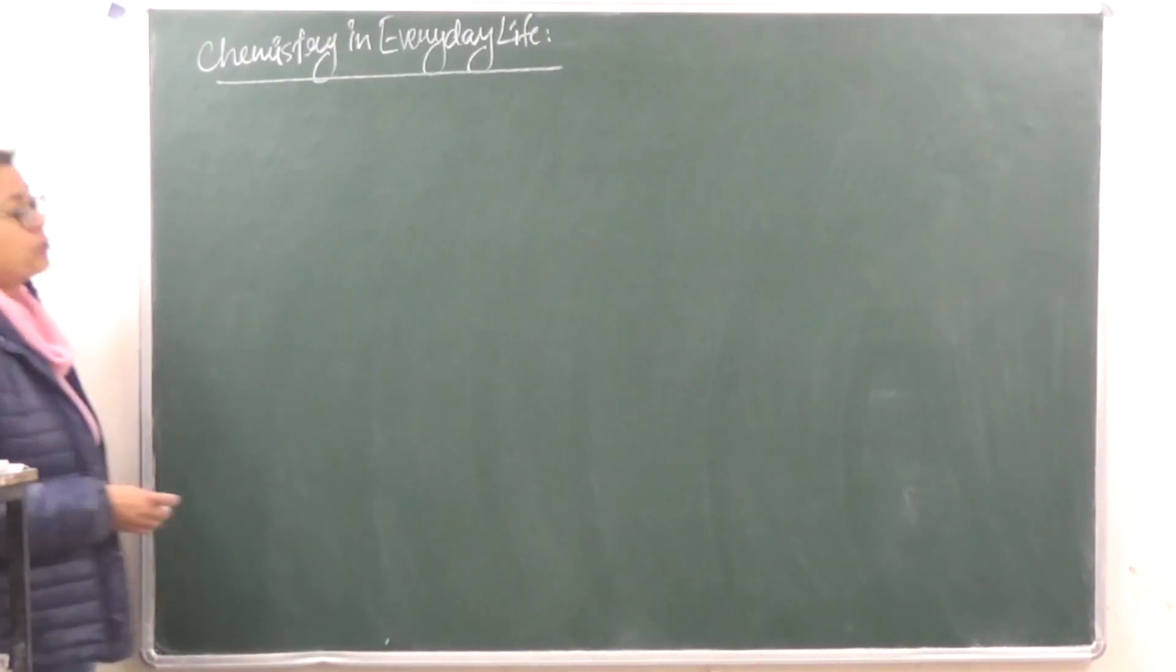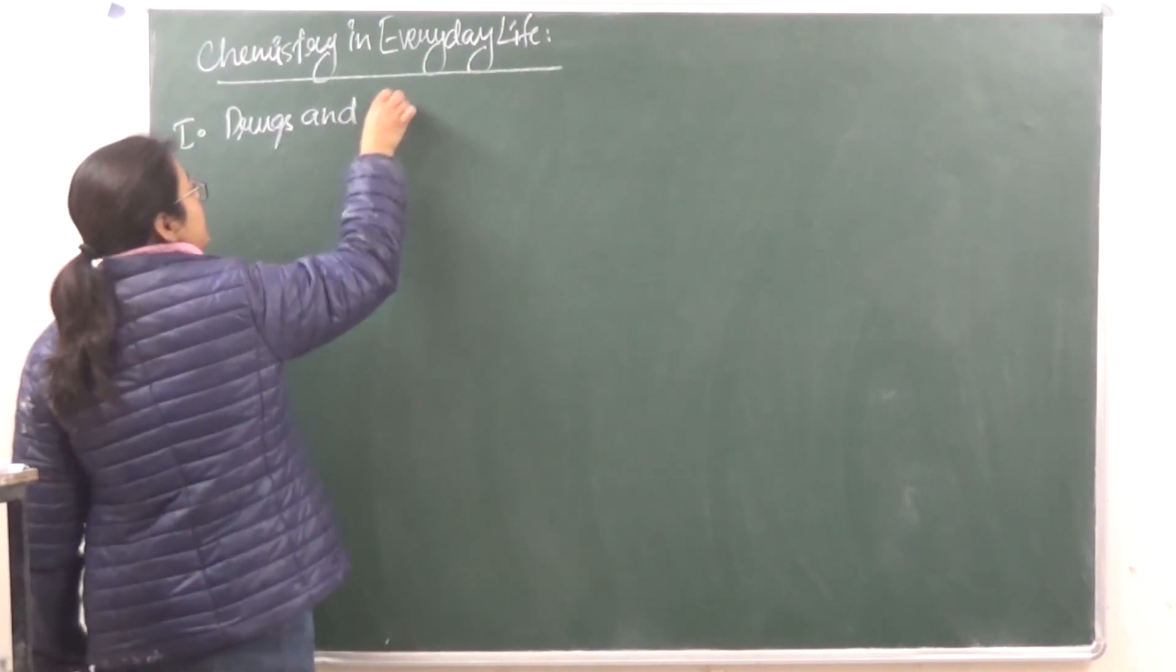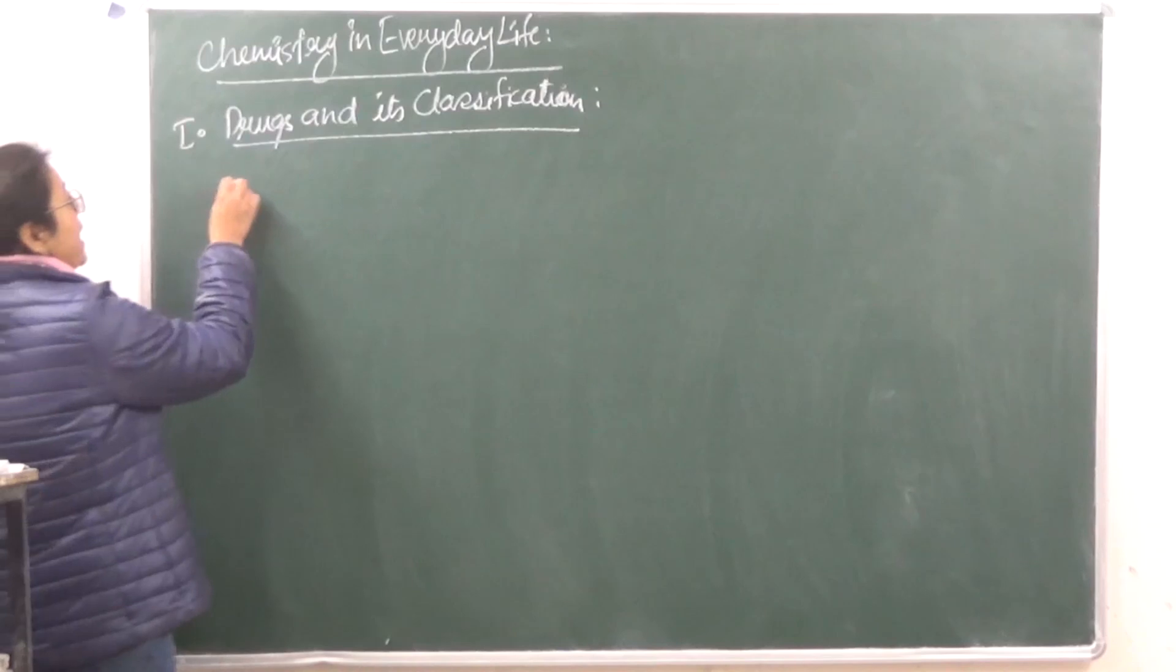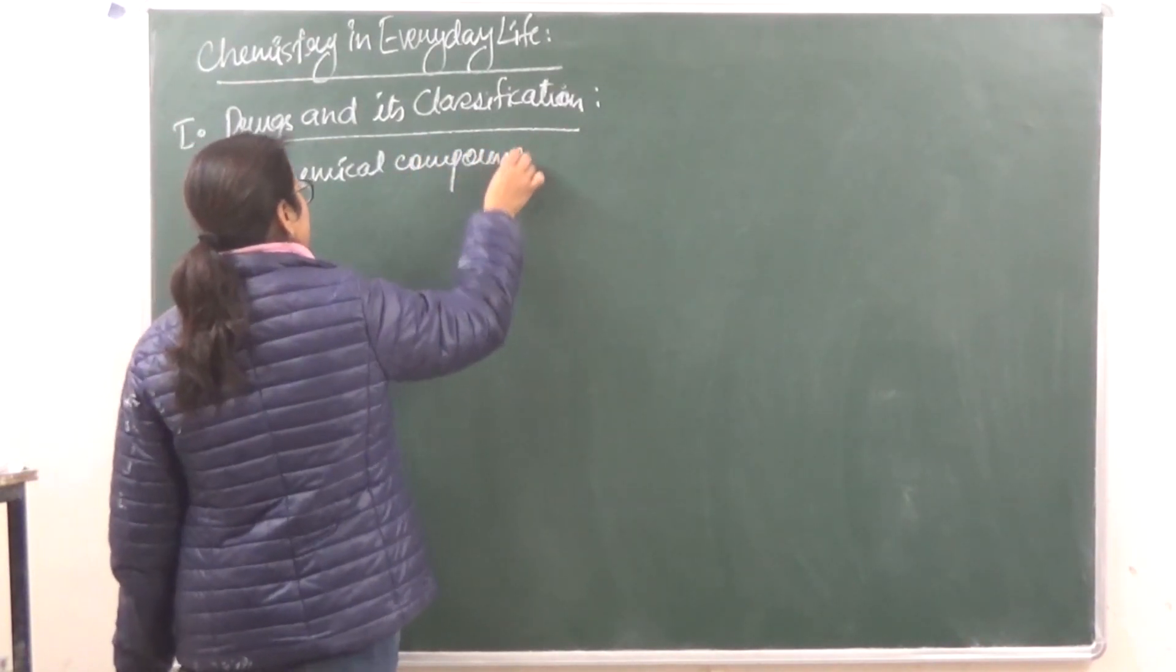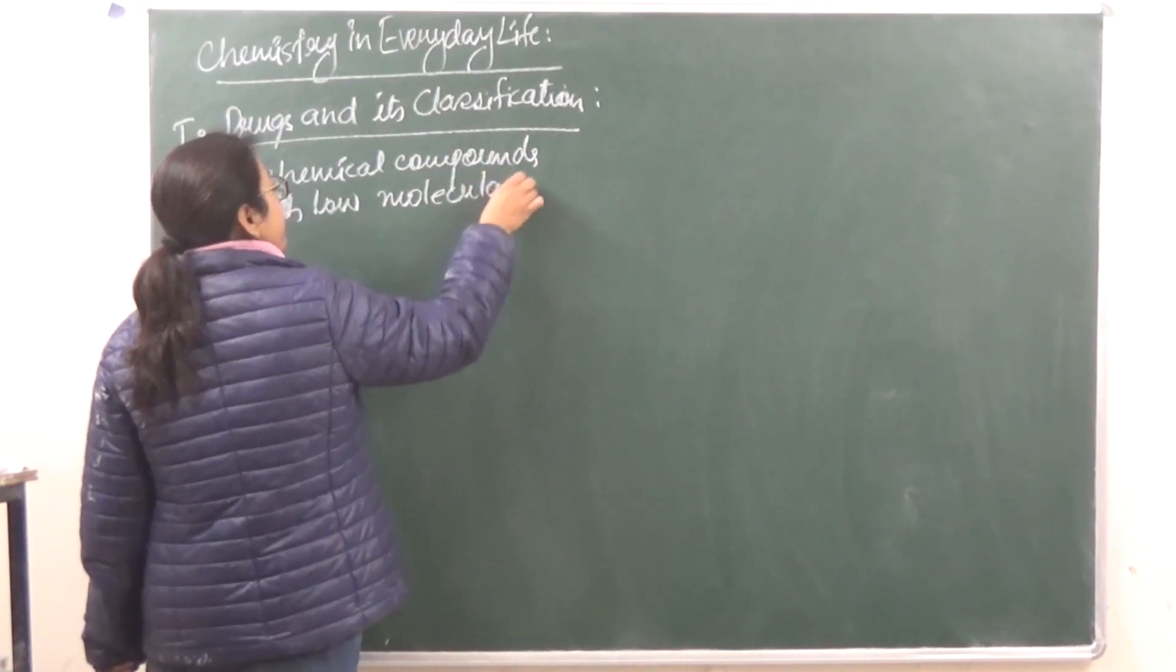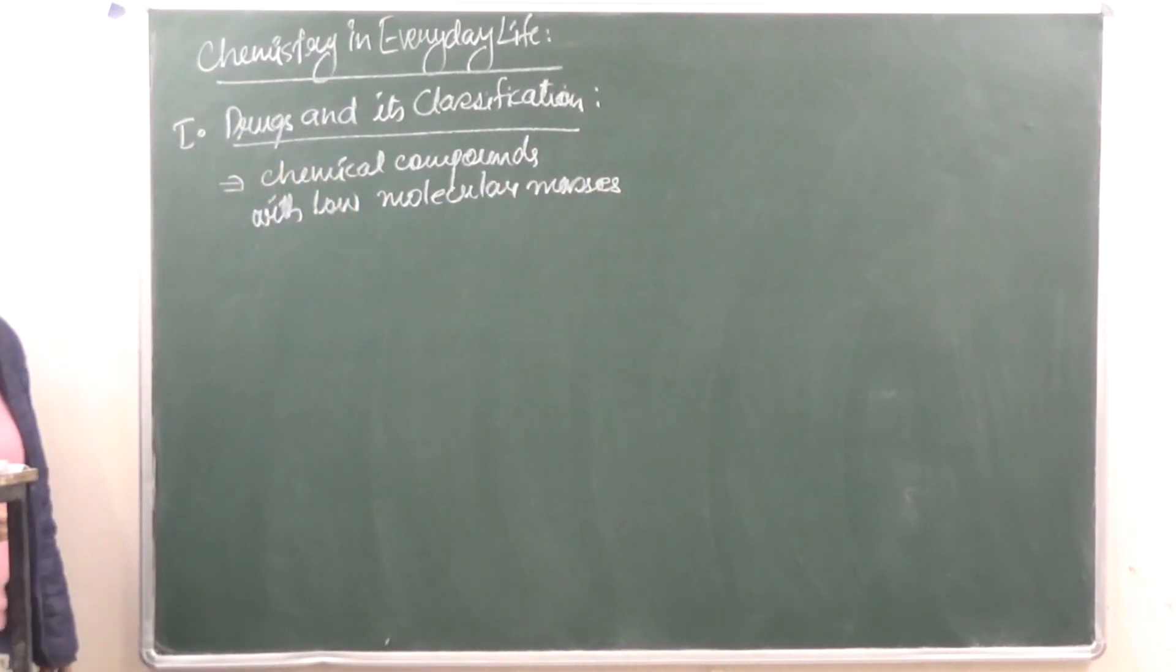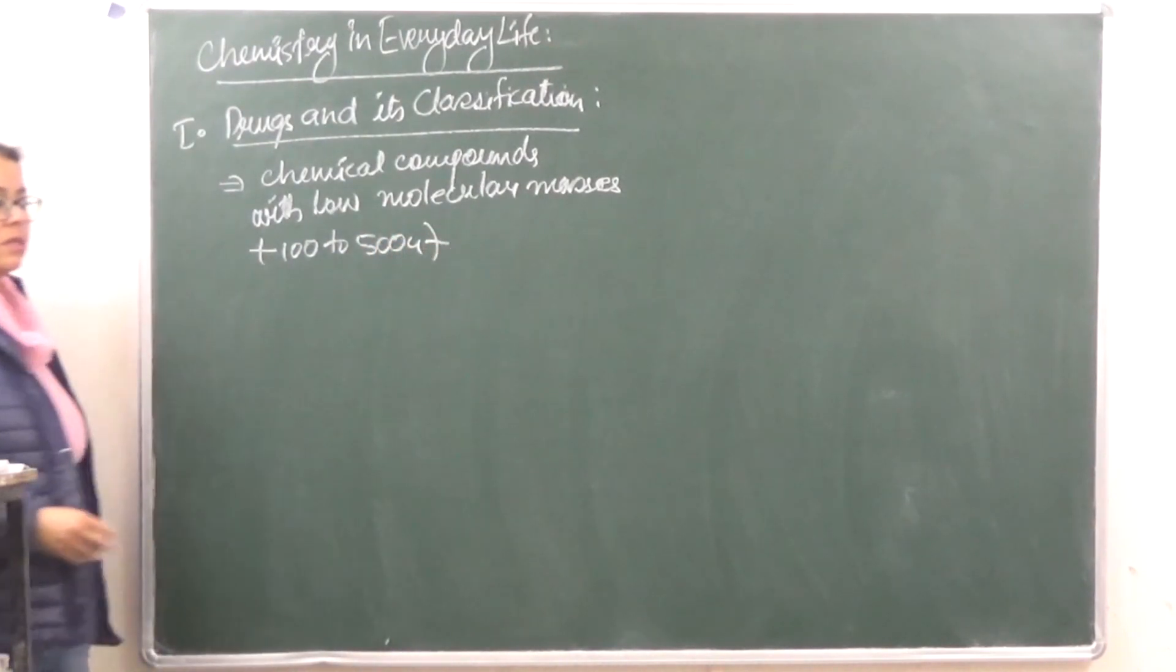The first thing which we are going to discuss, two topics we will discuss. So the first topic is drugs and its classification. Drugs, they are chemical compounds with low molecular masses, so they are of low molecular masses. Generally their molecular masses are in between 100 to 500 units.